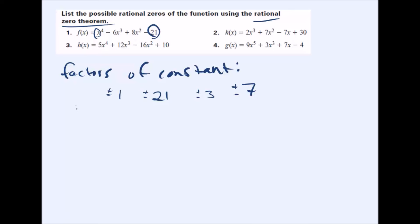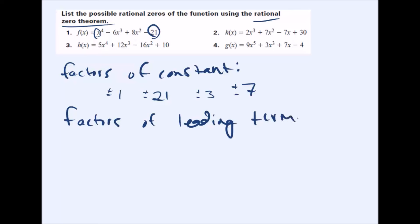Next, list the factors of the leading term — the term with the highest degree or the term in front. Here the leading term is x to the fourth, because that has the highest exponent. Since its coefficient is one, the only factor is 1 times 1, but we once again list plus or minus one.